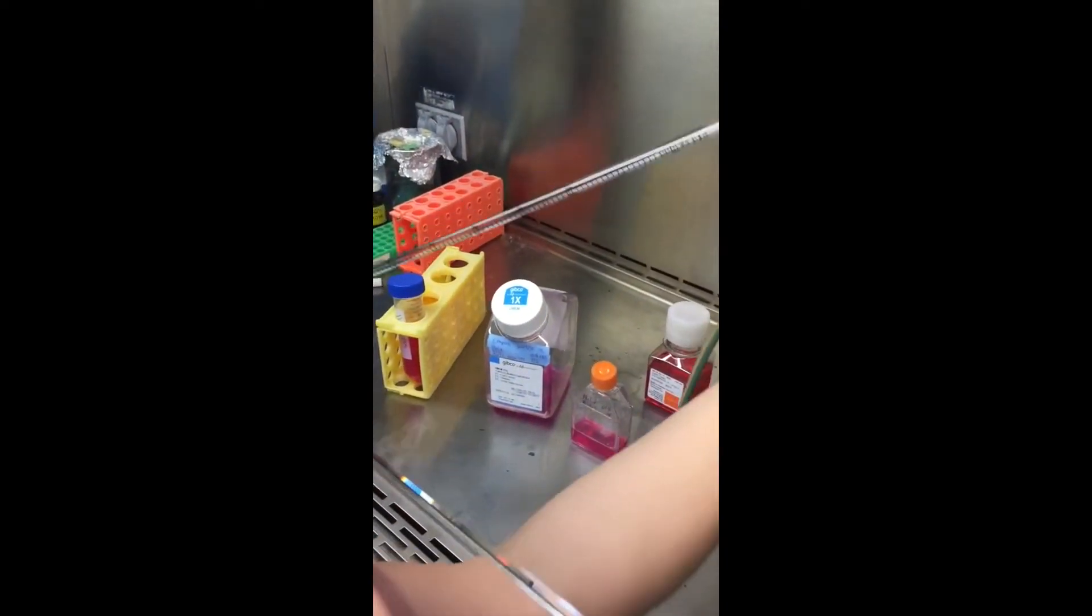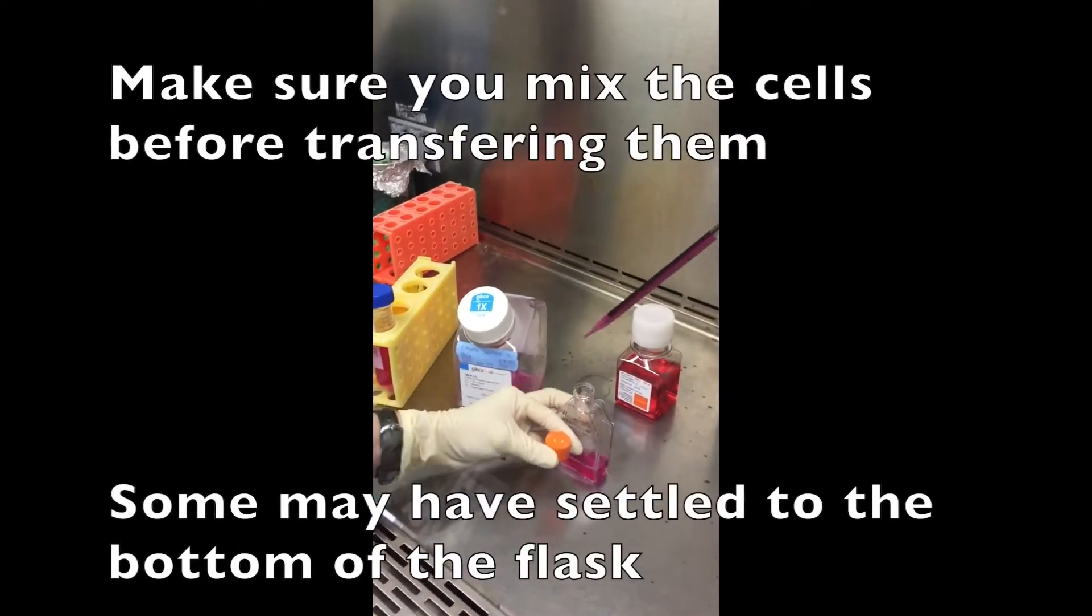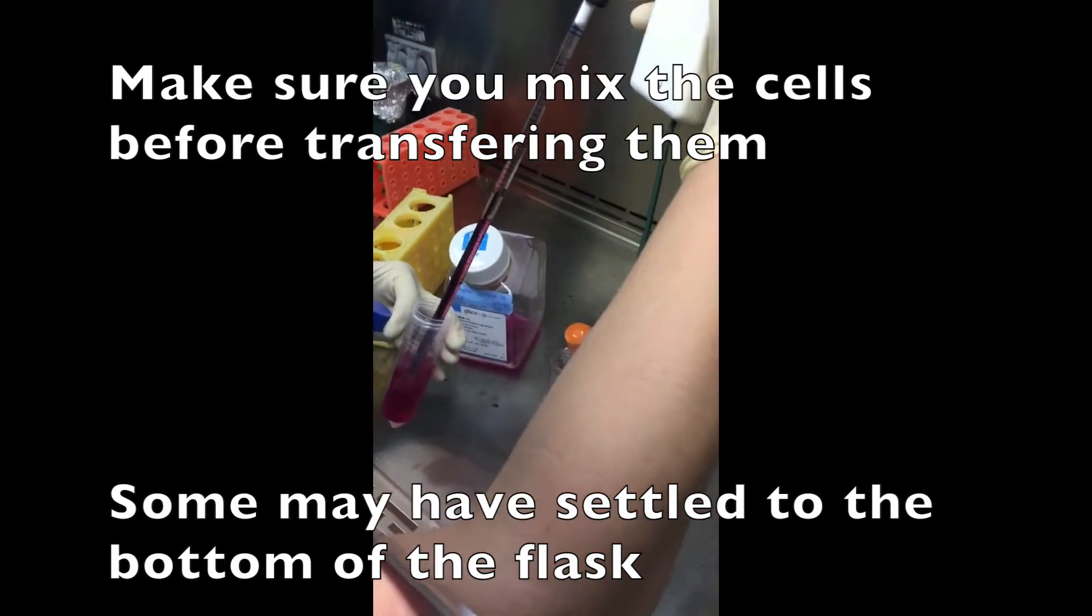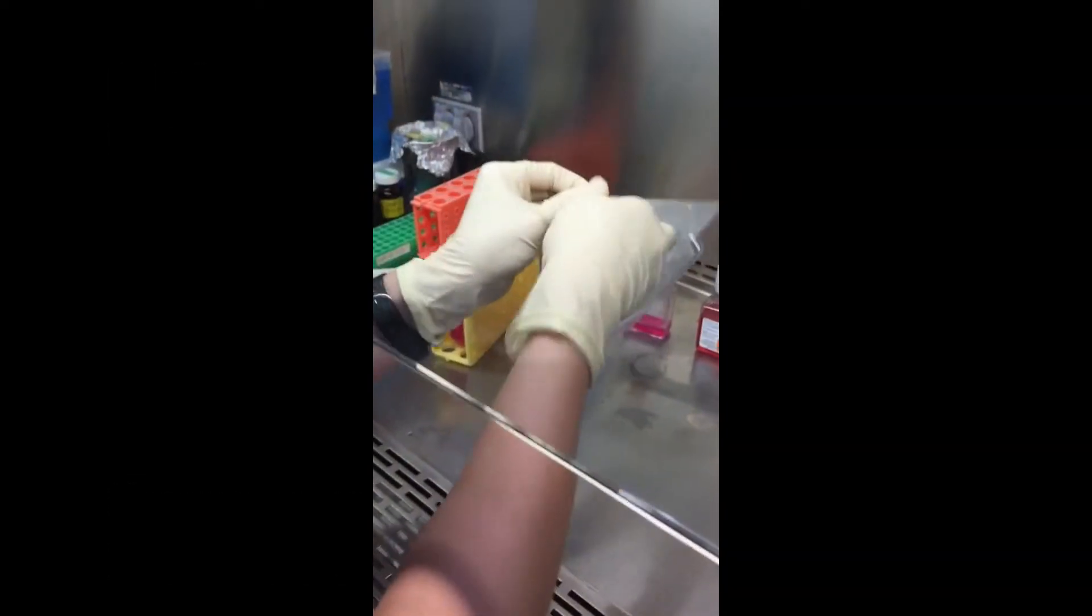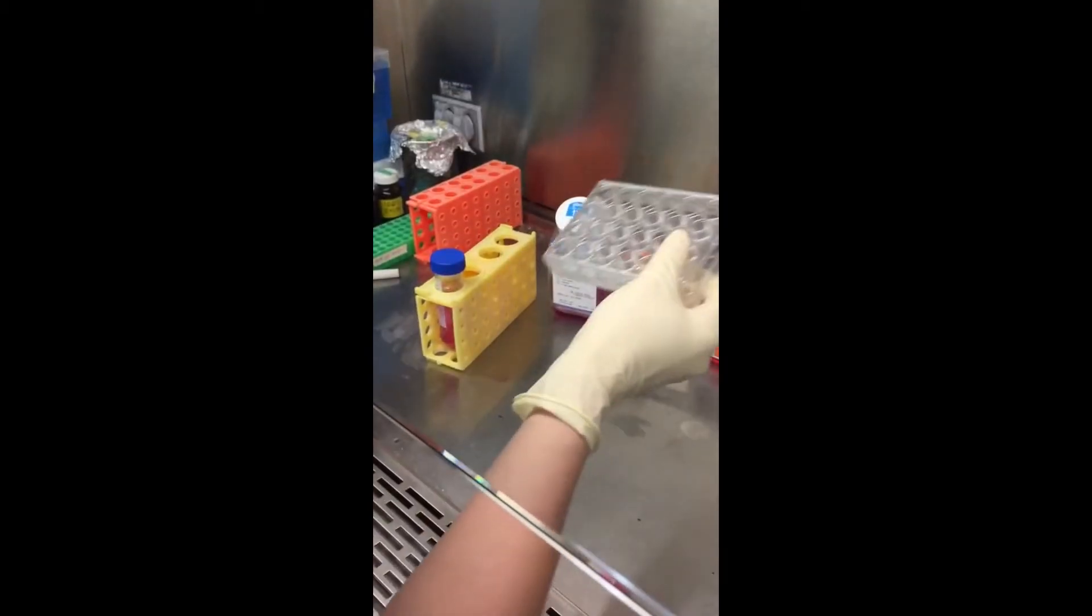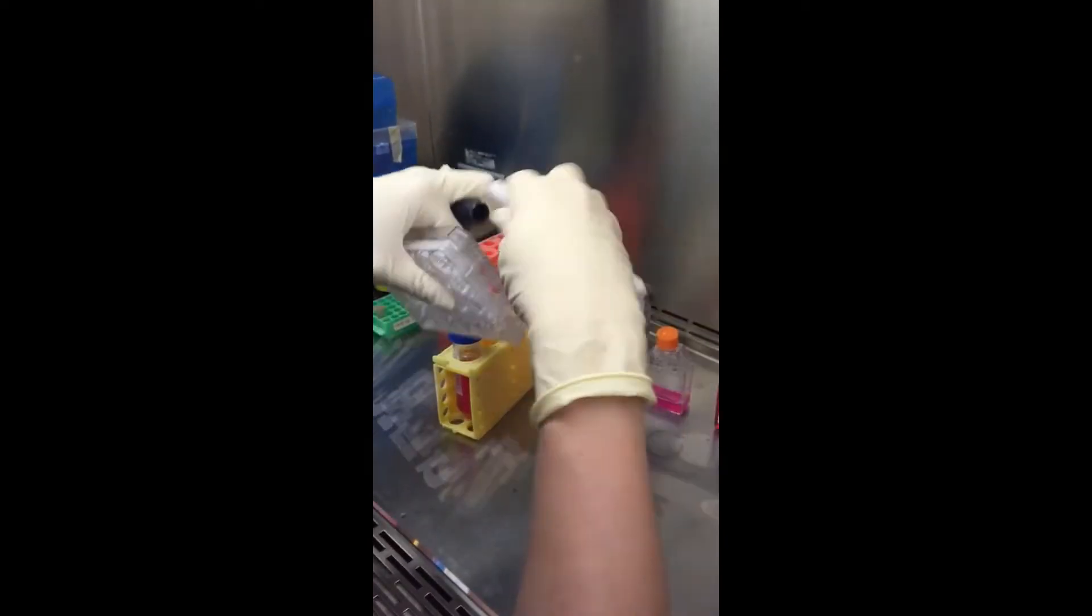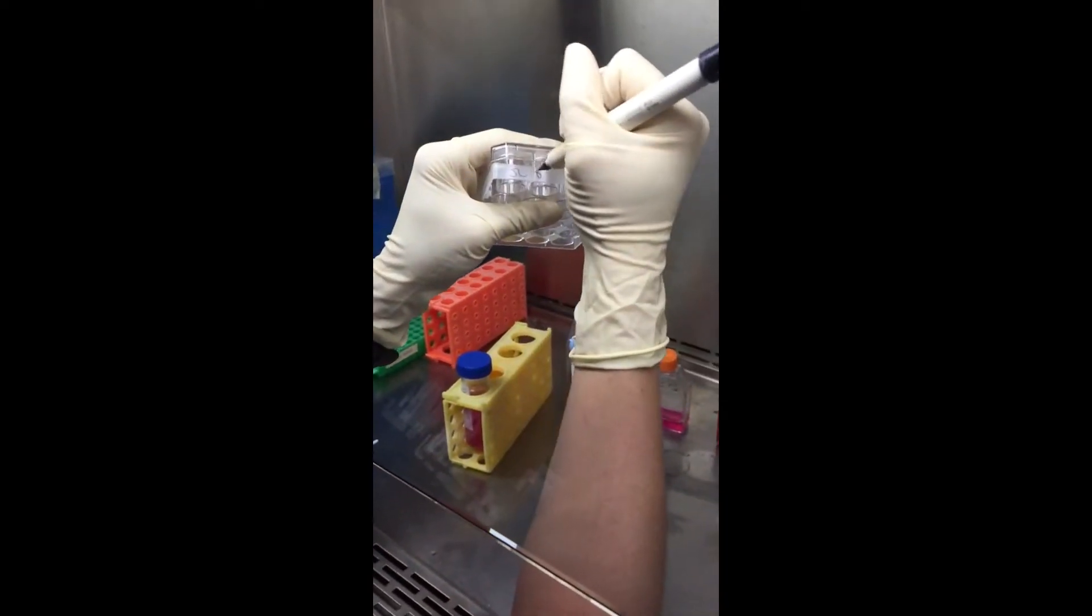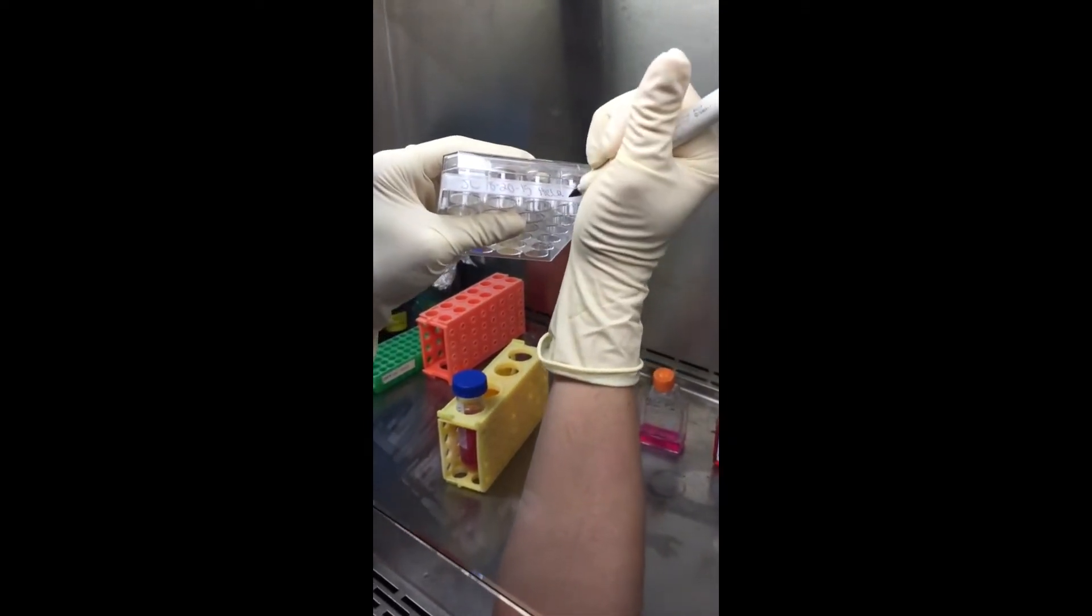Remember, it's easier to turn with the numbers going up. Plate underneath the hood. It's a good idea to go ahead and label the side before you put anything in it, so that you don't have to worry about spilling any of it. Initials, date, what you're doing. Alright.